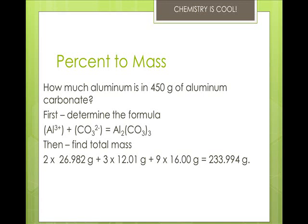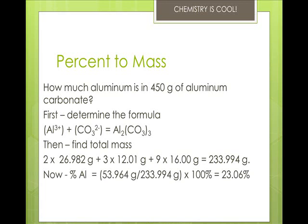So we take our totals. Our percent aluminum is 53.964 because it's 26.982 grams times 2, divided by 233.994 times 100 is 23.06%. And the percent aluminum times the total mass of the sample given